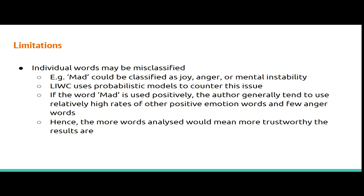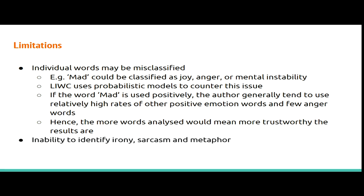Although LIWC sounds very useful, there are several limitations. For example, the word 'mad' could reflect joy, anger, or mental instability. LIWC uses probability to determine which category it falls under — if somebody uses 'mad' in a positive manner, the software assumes the author will generally use higher relative rates of other positive emotions and fewer anger words elsewhere in the text. This means that using more text makes your results more trustworthy. However, a key drawback is that LIWC is still unable to identify things like sarcasm, which can be problematic when interpreting results for business users.